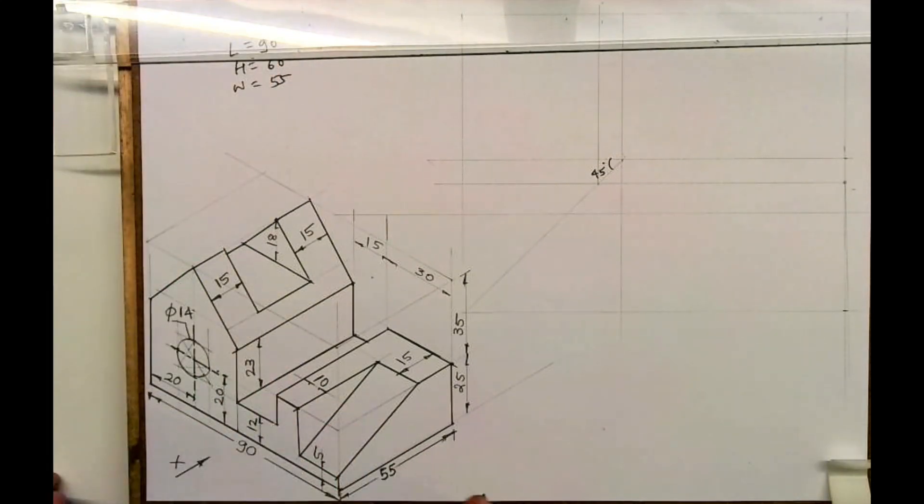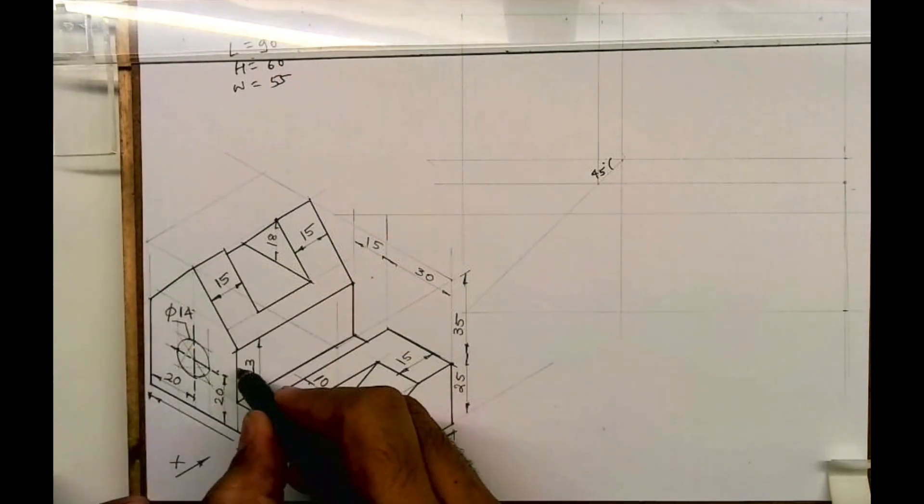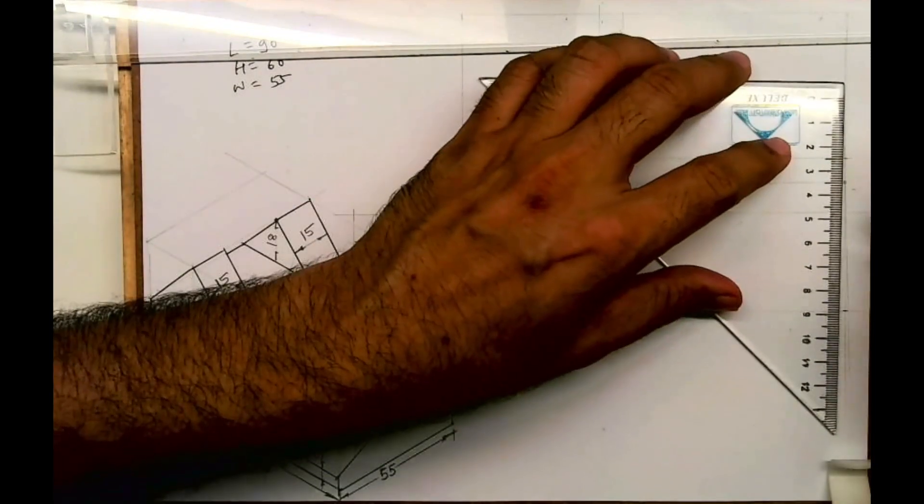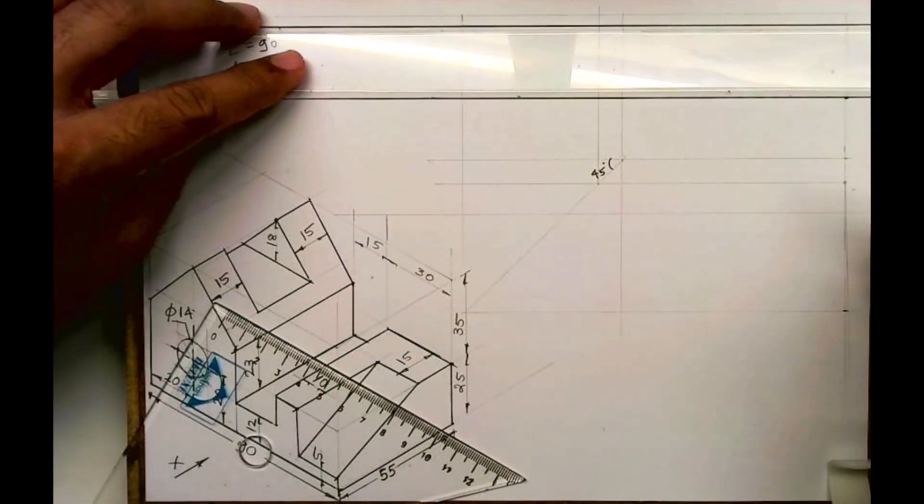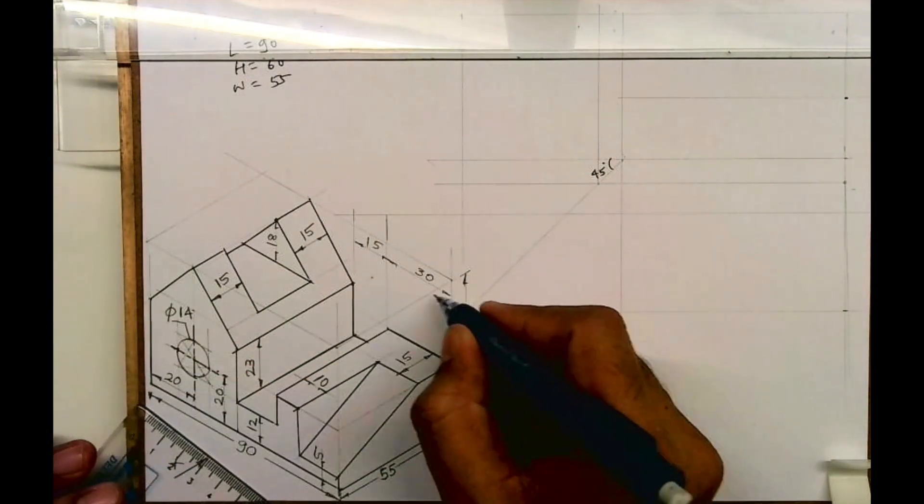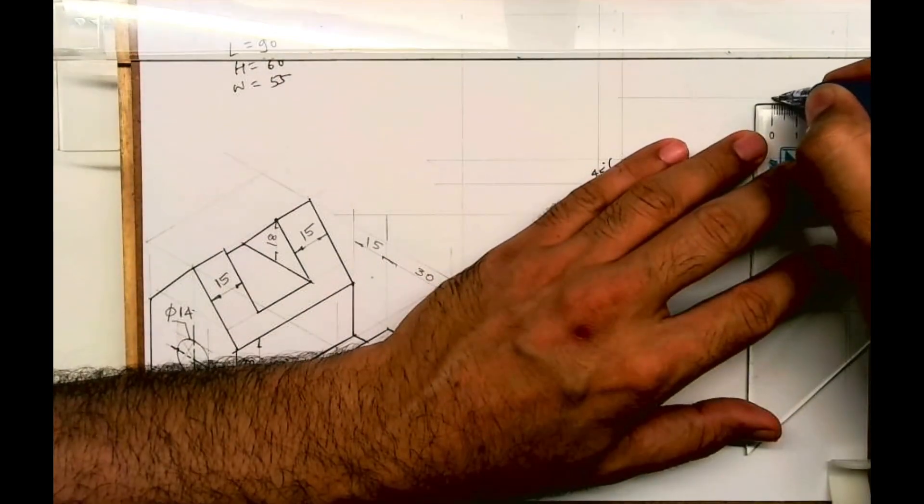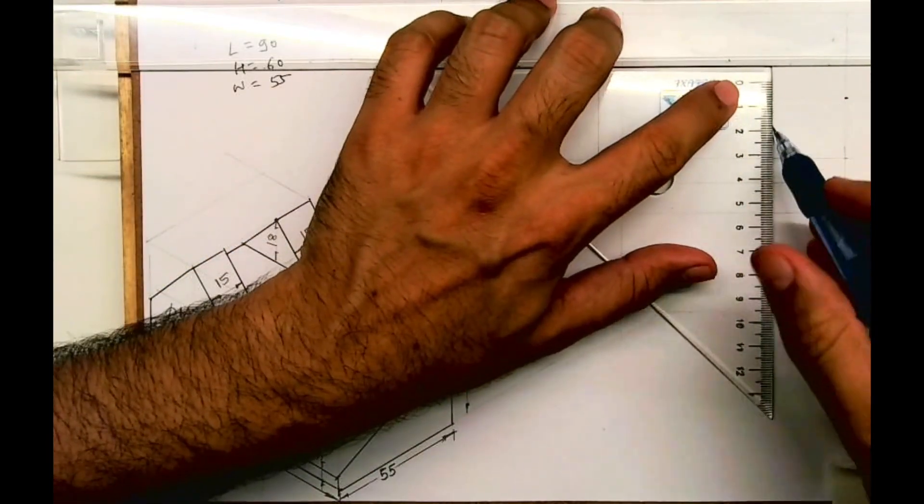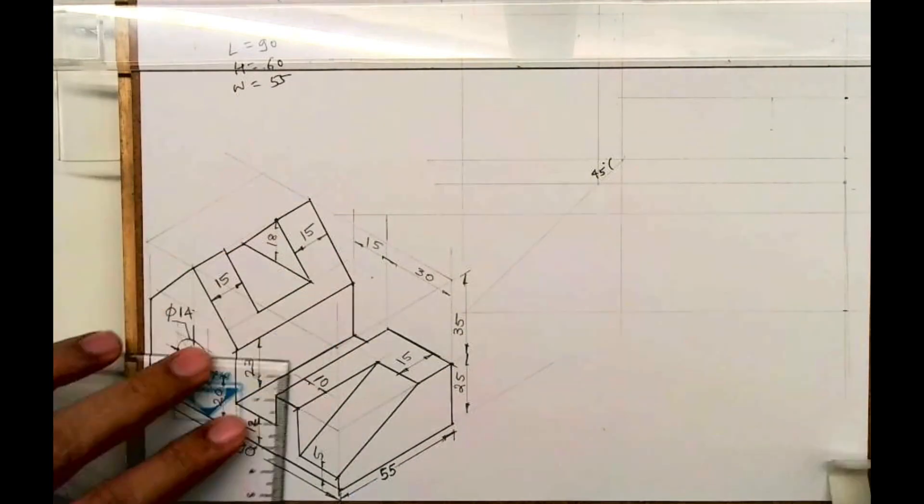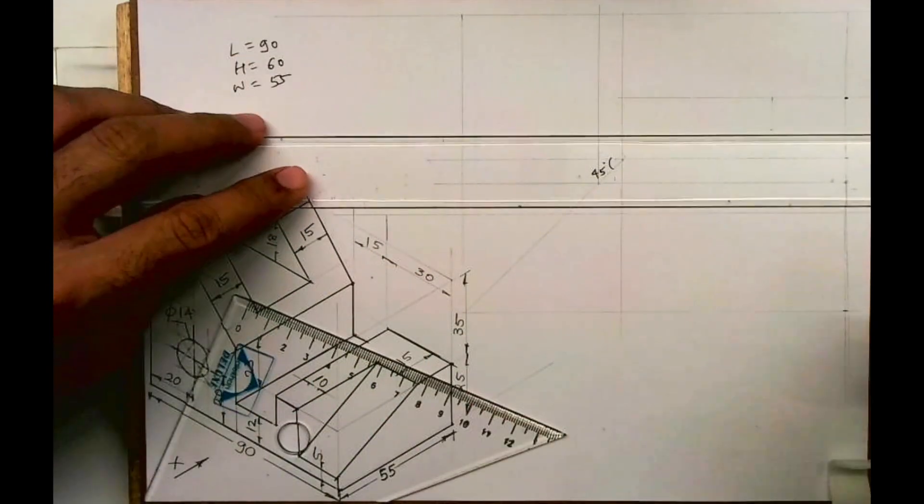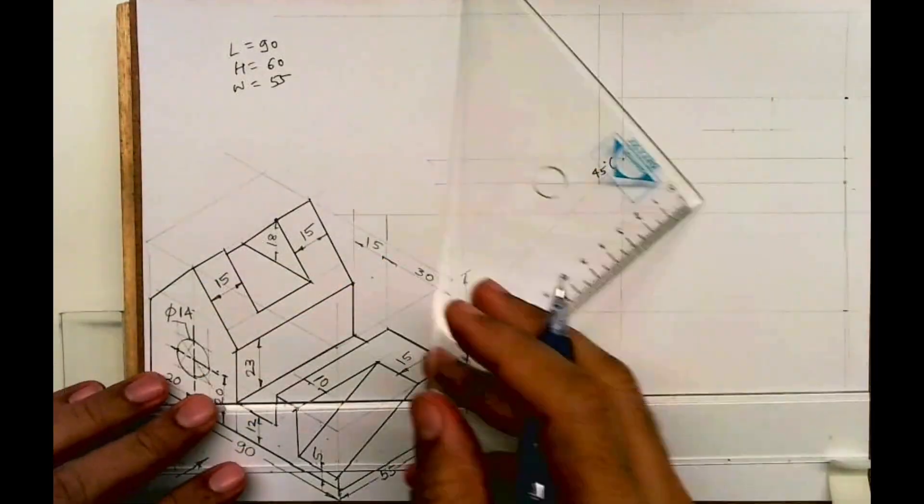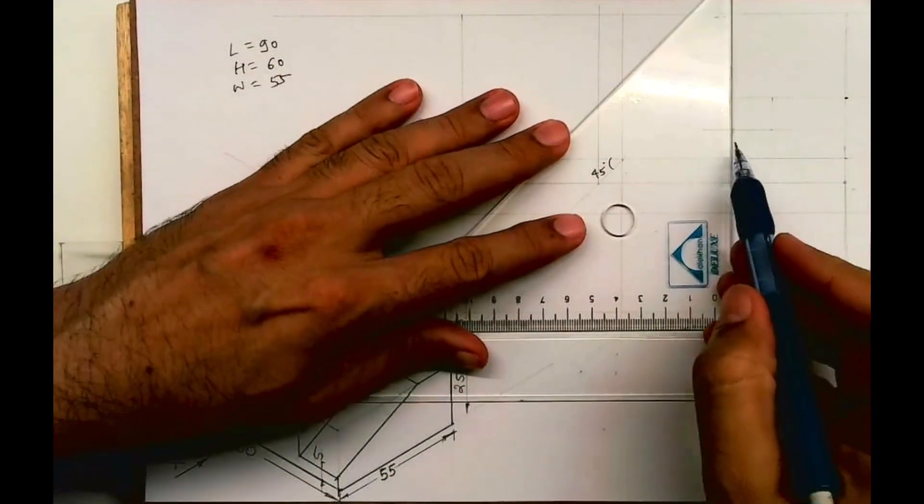In front view, when you start, we'll draw this part. First we will draw this shape, this is 25. Now how much is this length? This is 30. Then you have to come down - this is 25 minus 12 equals 13. Then this is 15, and then you go up by 23.